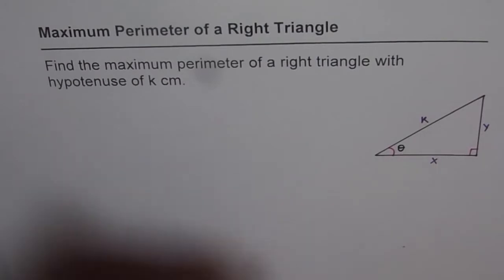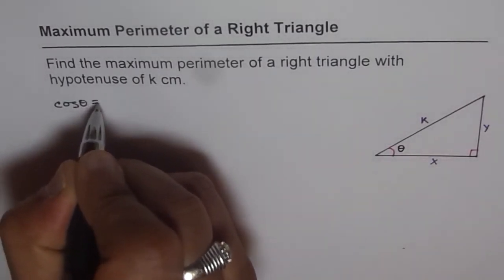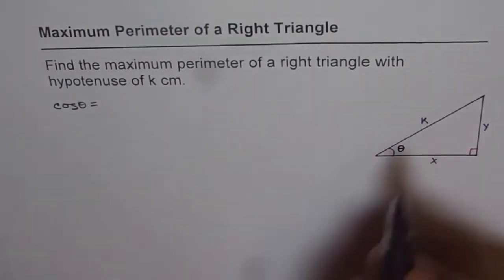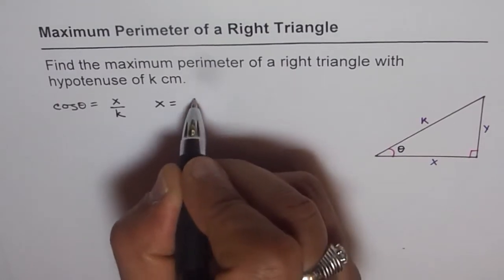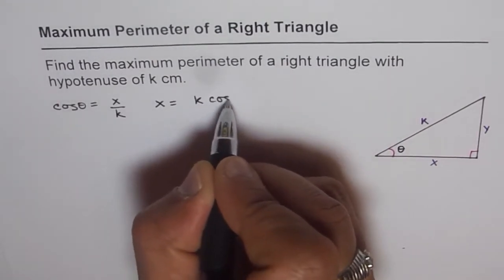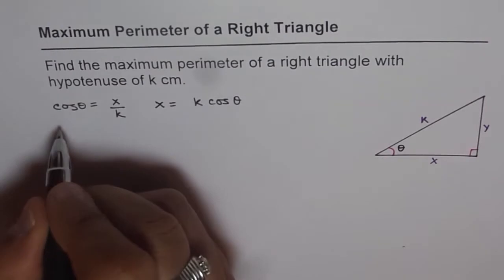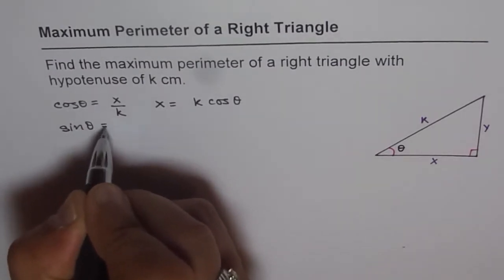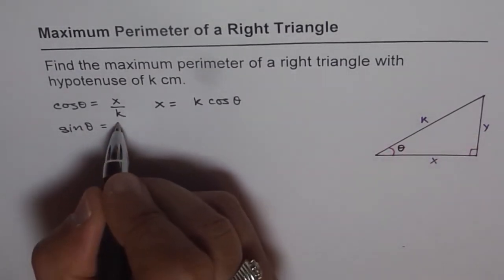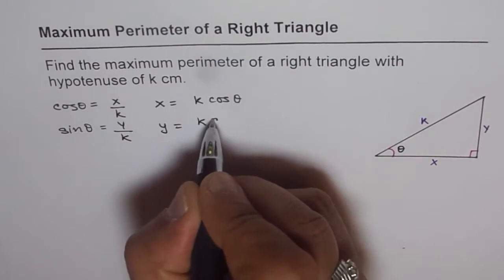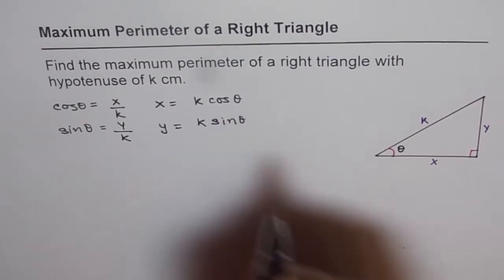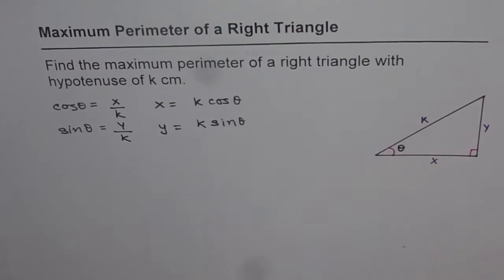If this angle is theta, how can we write x and y in terms of k? cos θ equals x over k, therefore x equals k·cos θ. Similarly, sin θ equals y over k, therefore y equals k·sin θ. So we have a relation between x and y in terms of k and theta.